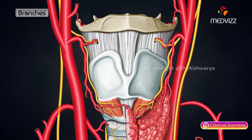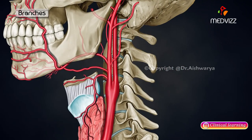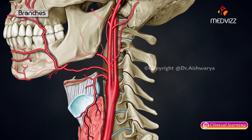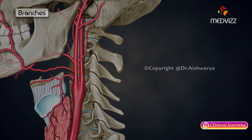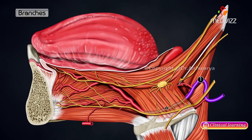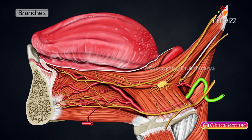The next branch is the lingual artery. It arises from the external carotid artery opposite the tip of the greater cornua of the hyoid bone. Its course is tortuous and it is divided into three parts by the hyoglossus muscle. The first part lies in the carotid triangle, where it forms a characteristic upward loop which is crossed by the hypoglossal nerve. This lingual loop permits free movements of the hyoid bone.